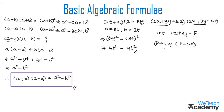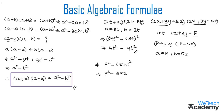We can observe that (p + 5z)(p − 5z) is in the form of (a + b)(a − b). By comparing, a = p and b = 5z. Writing this as a squared minus b squared, we get p squared minus (5z) whole squared, which implies p squared minus 25z squared.